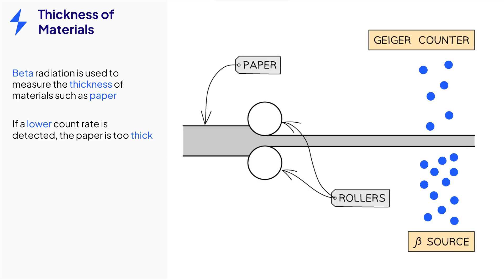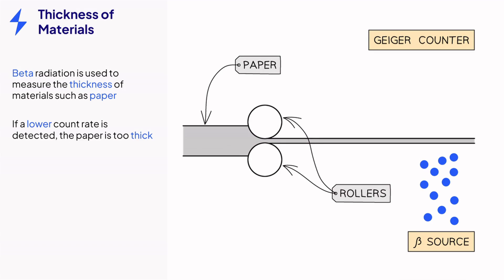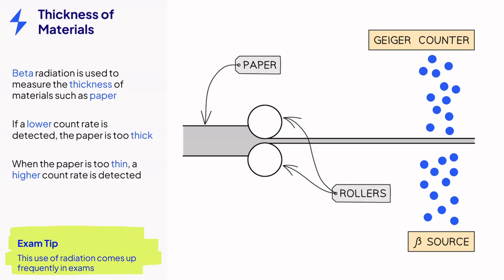When the material is too thick, the count rate detected by the Geiger counter decreases. Conversely, if the material gets too thin, a higher count rate is recorded by the Geiger counter. The reason we have covered this use in extra detail is because it comes up so often in exams.